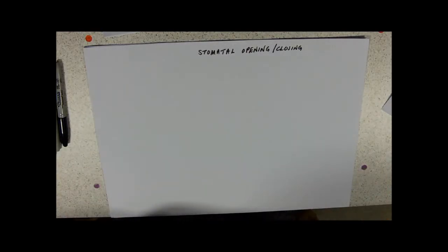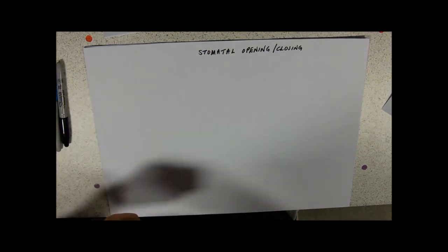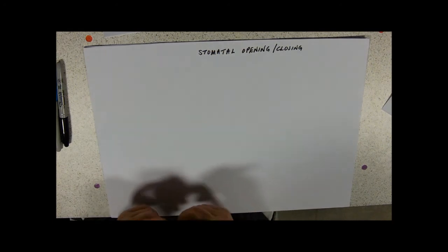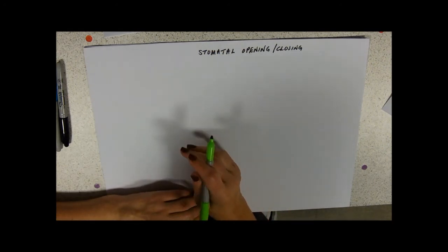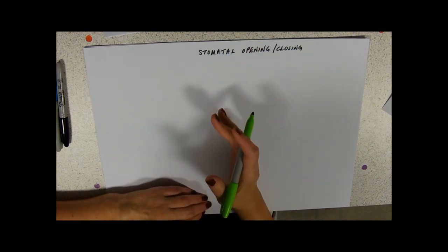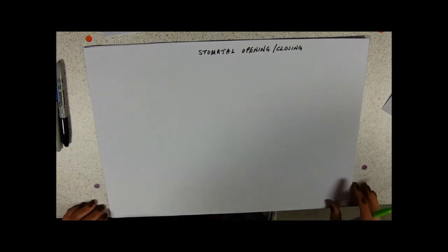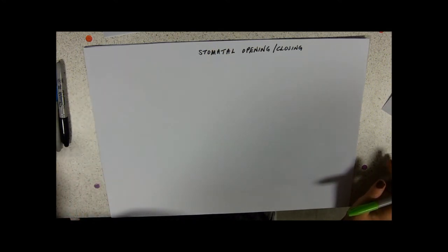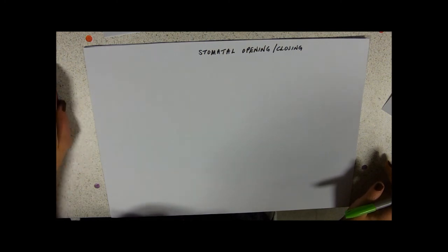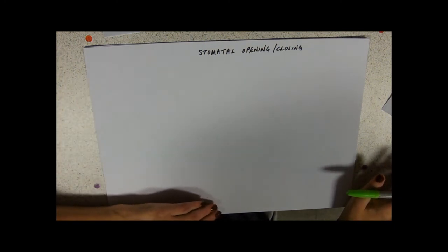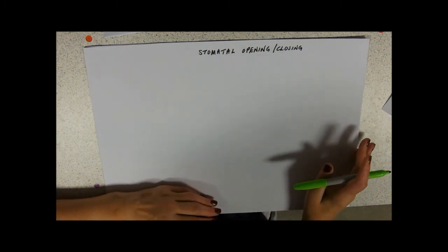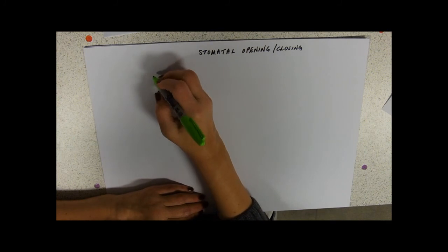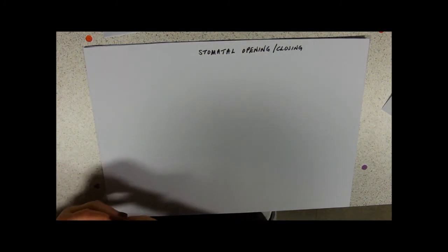This video is on stomatal opening and closing, remembering that this is in the gas exchange bit but it's also an adaptation to life on land. Stomata are for carbon dioxide to get in to the air spaces so it can diffuse to the gas exchange surface and to allow oxygen to diffuse from the gas exchange surface into the air spaces and out of the leaf. The downside is that water can leave as well, and water is something that the plant doesn't want to lose because it's got limited availability on land. So I'm just going to draw a quick picture of some open guard cells.